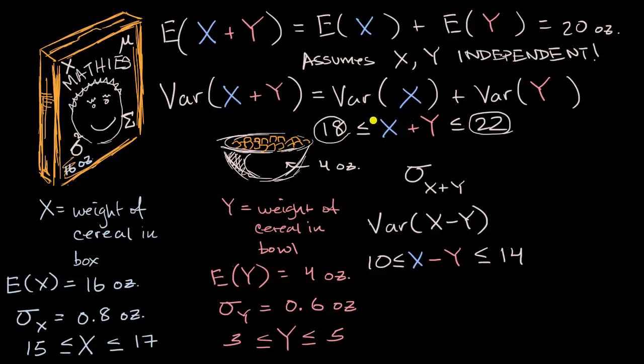So notice, just as we saw in this case of the sum, even in the difference, your variability seems to have increased. This is still going to be, the extremes are still further than the mean of the difference. The mean of the difference would be 16 minus four is 12. These extreme values are two away from the 12.